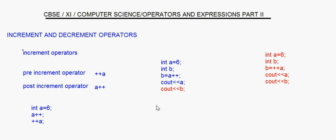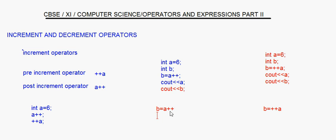Now let's understand how these two codings work. In the first, the statement is b = a++ — this is a post-increment. In the second, it is b = ++a — this is a pre-increment. In both cases you have two operators: the assignment operator and the increment operator.